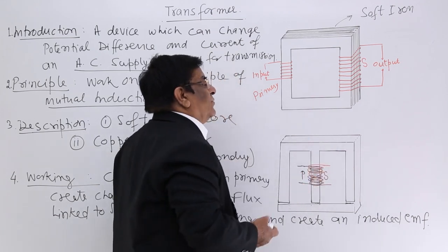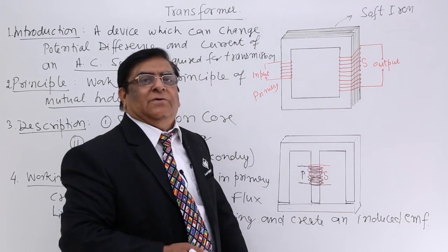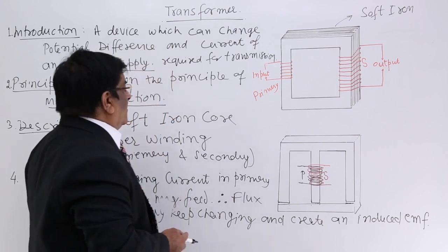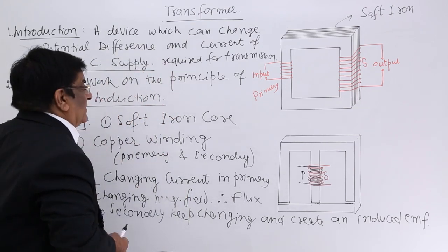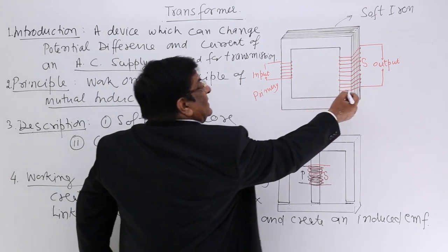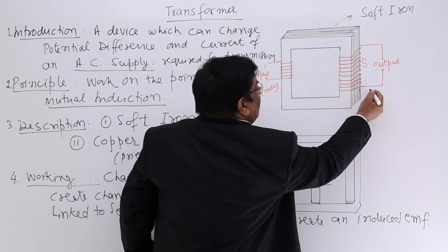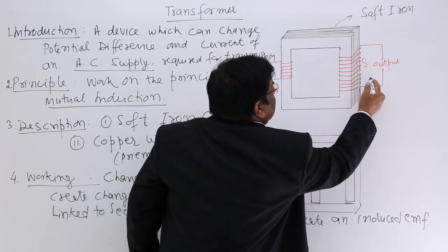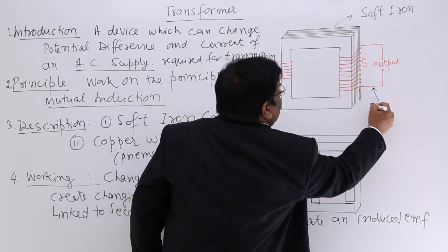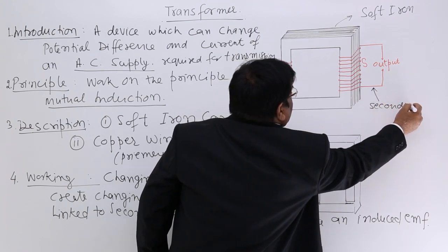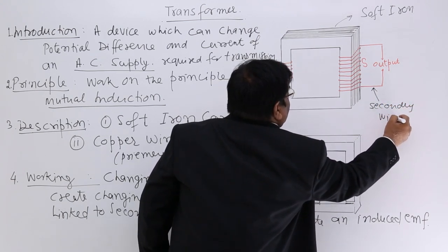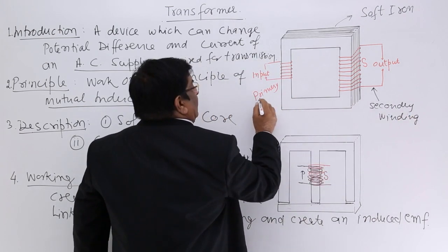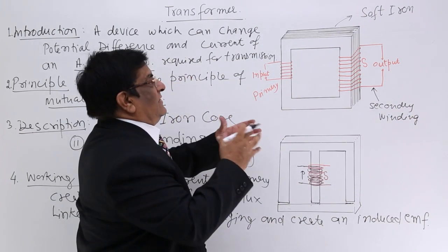For study purposes, both core types are equivalent — the working is the same. The windings are made of pure copper wire. One winding is called the primary winding and the other is called the secondary winding. We can always reverse which is primary and which is secondary.